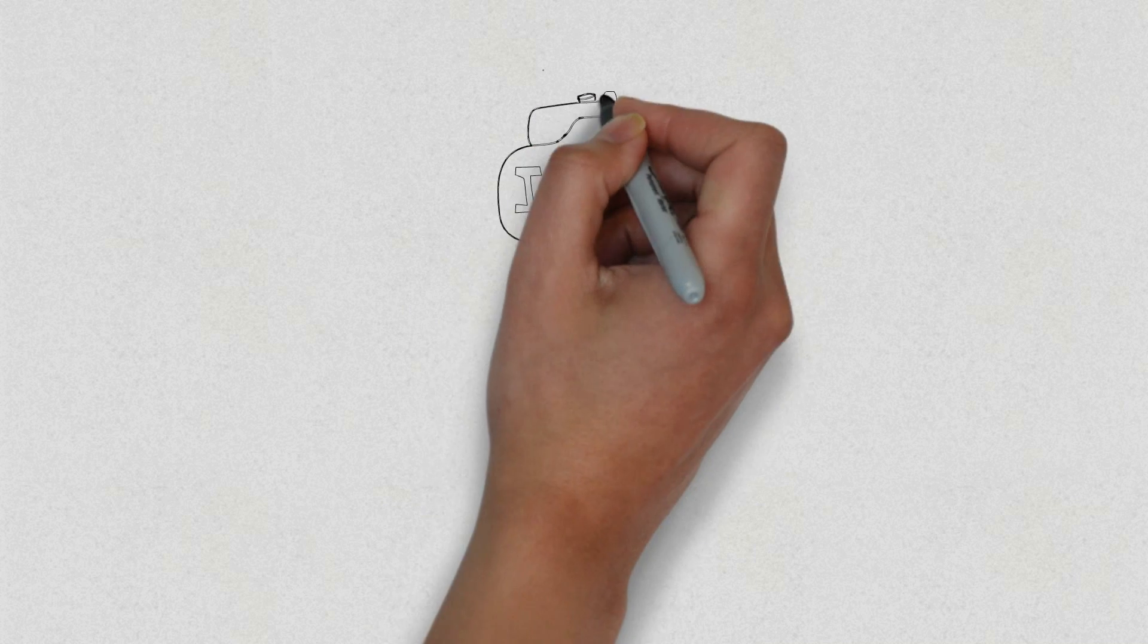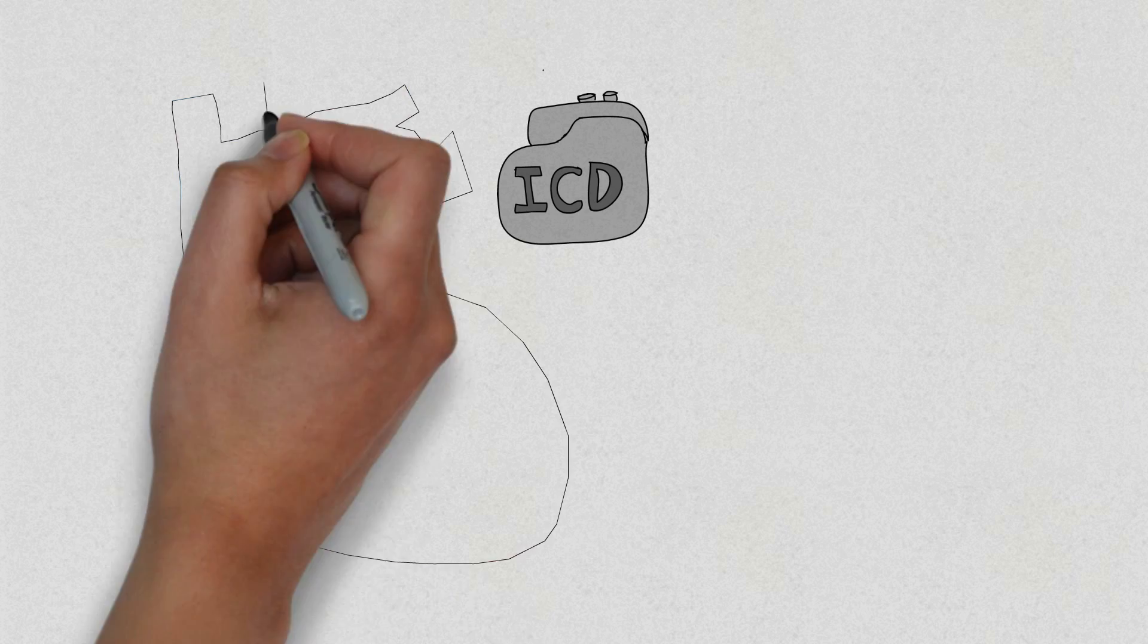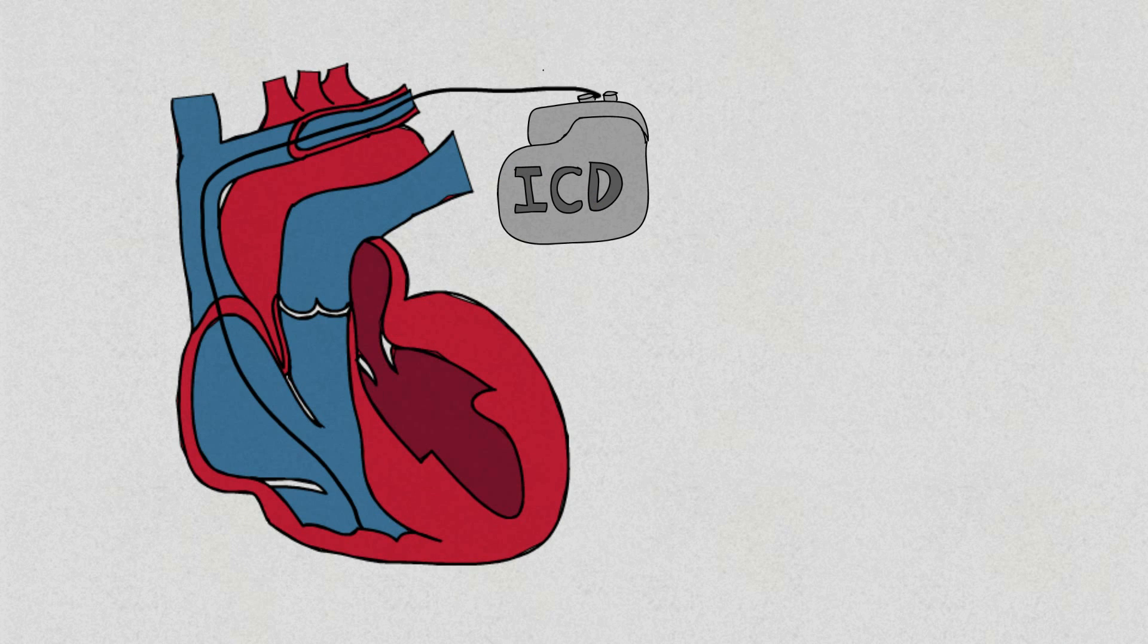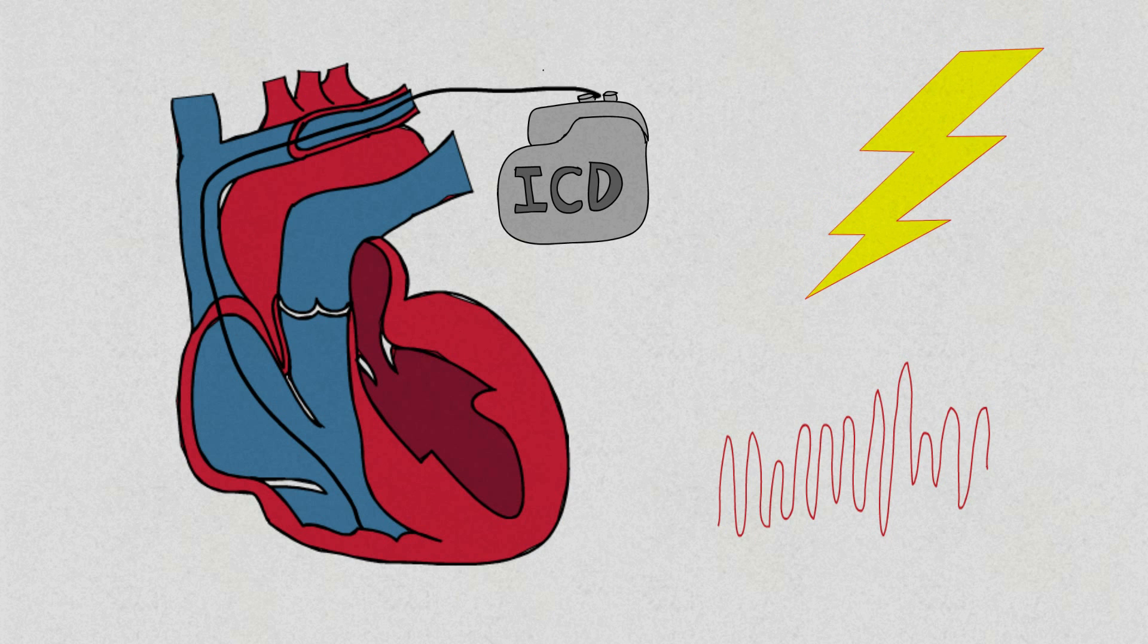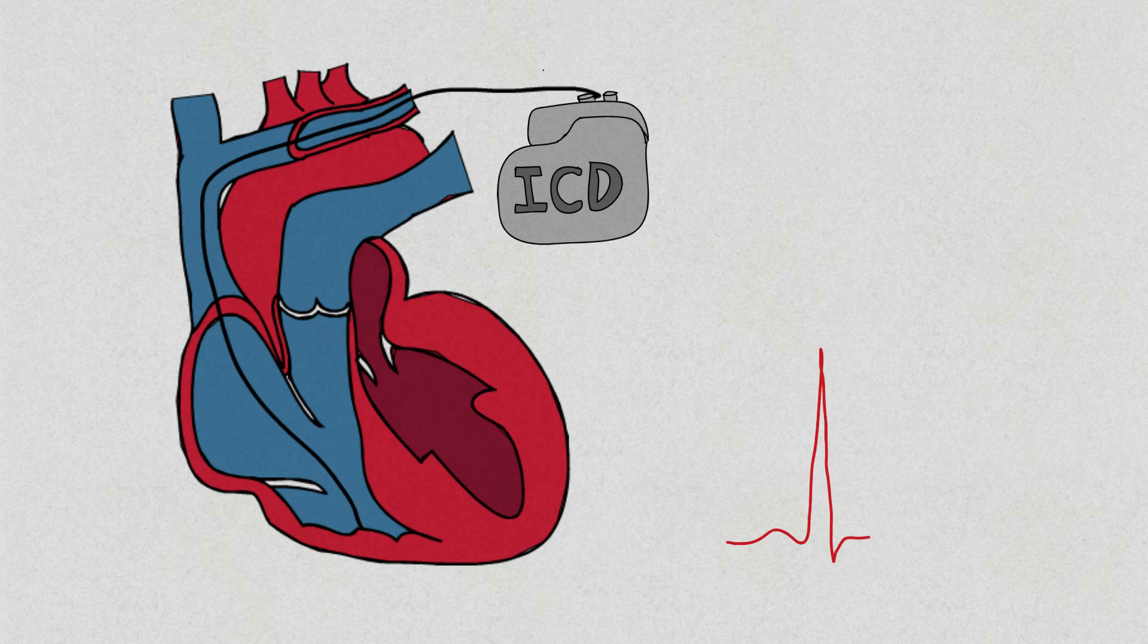An ICD is a palm-sized battery-powered device placed under the skin, which is used to treat dangerous heart rhythms. Thin wires connect the device to your heart, keeping track of your heart rate. If a dangerous heart rhythm is detected, the device will deliver an electric shock to restore normal heartbeat. ICDs have been very useful in saving lives in these patients.